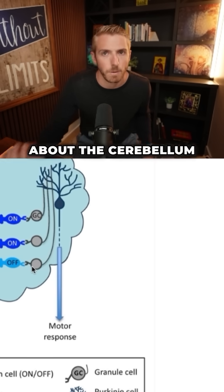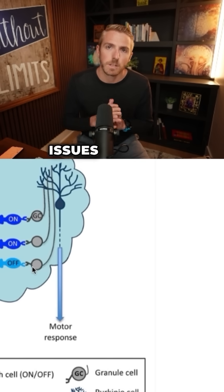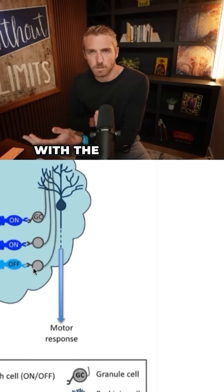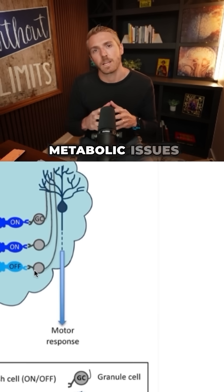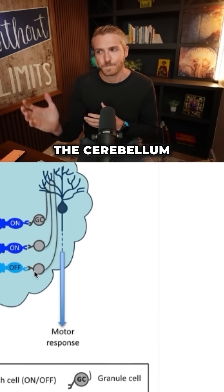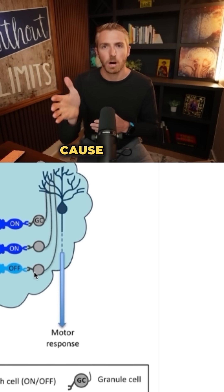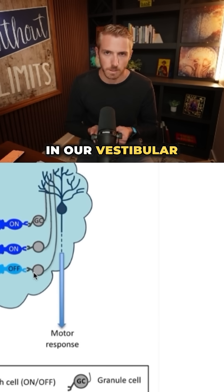we talked all about the cerebellum and different autoimmune issues that can affect the cerebellum, how gluten can cross-react with the cerebellum, and dairy, and all these different underlying metabolic issues that happen with the cerebellum.